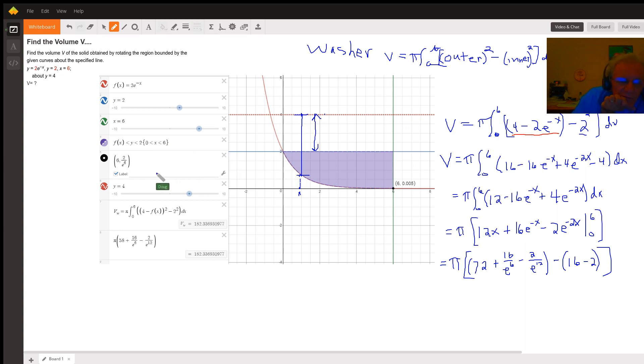Now, on Desmos, I was able to enter V sub W for the washer method, pi from 0 to 6, because we're creating shells along the x-axis.